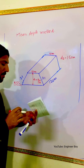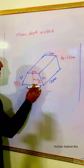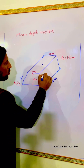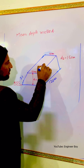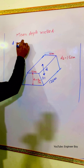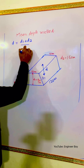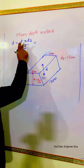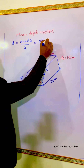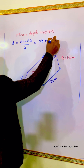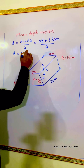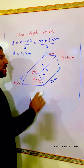Mean depth method is going to be simple. We have different depths at each section, so we take the mean depth at the center. Mean depth D = (D1 + D2) / 2 = (0.8 + 1.50) / 2 = 1.15 meters.